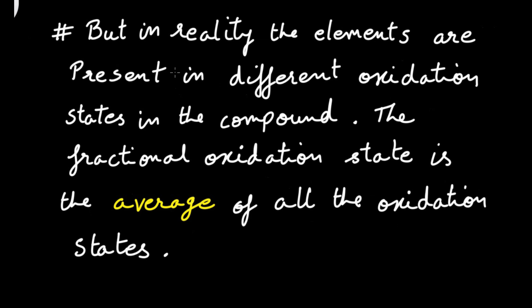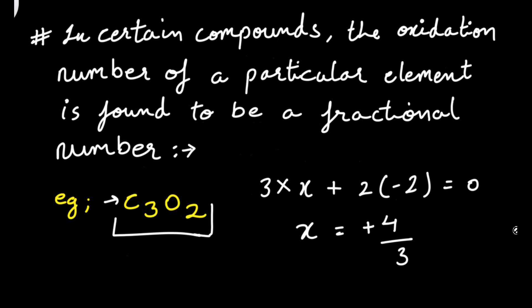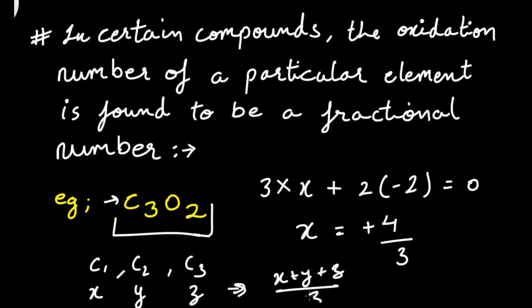In reality, the elements are present in different oxidation states in the compound. The fractional oxidation state is the average of all the oxidation states. There are three carbons — let them be C1, C2, C3 — with oxidation states x, y, and z respectively. When you take the average, (x + y + z) / 3, you will get +4/3. You can find the individual oxidation states by looking at the structure of the compound.